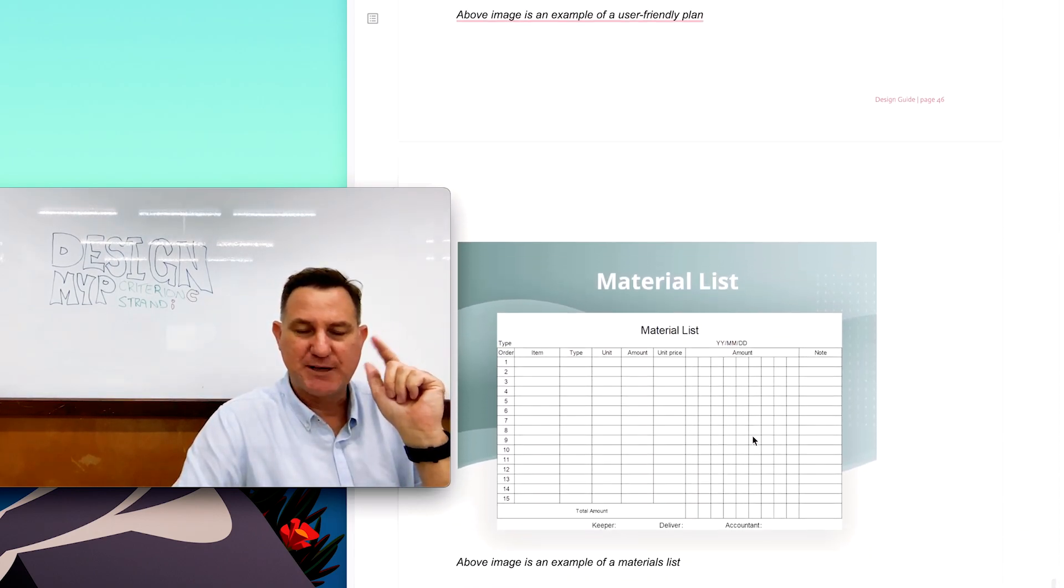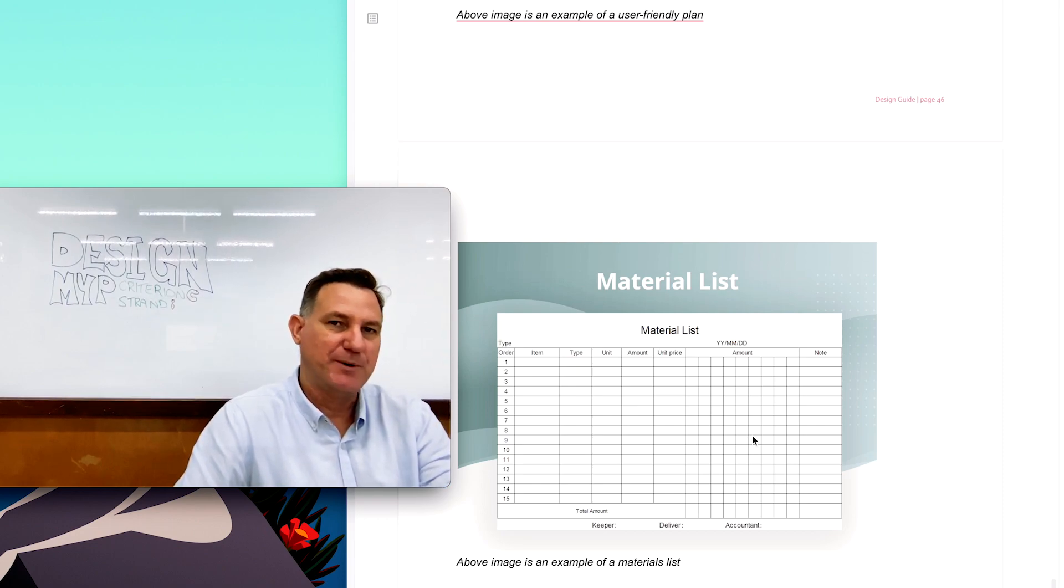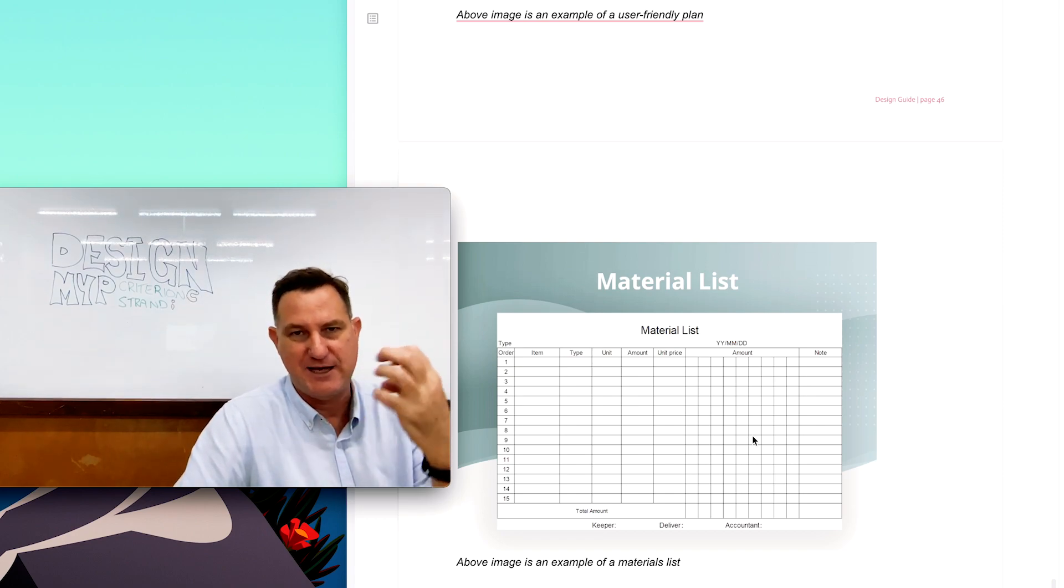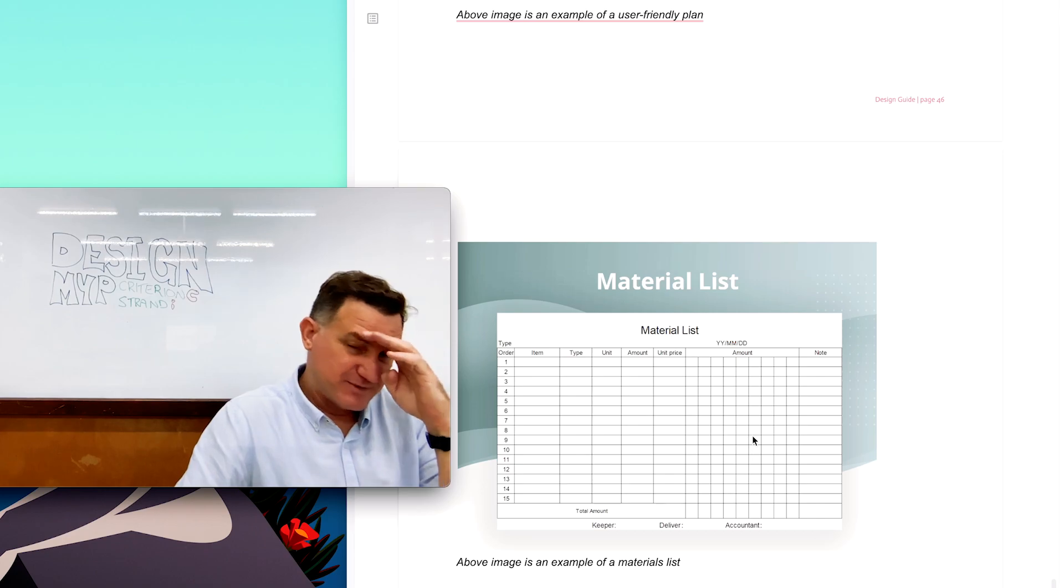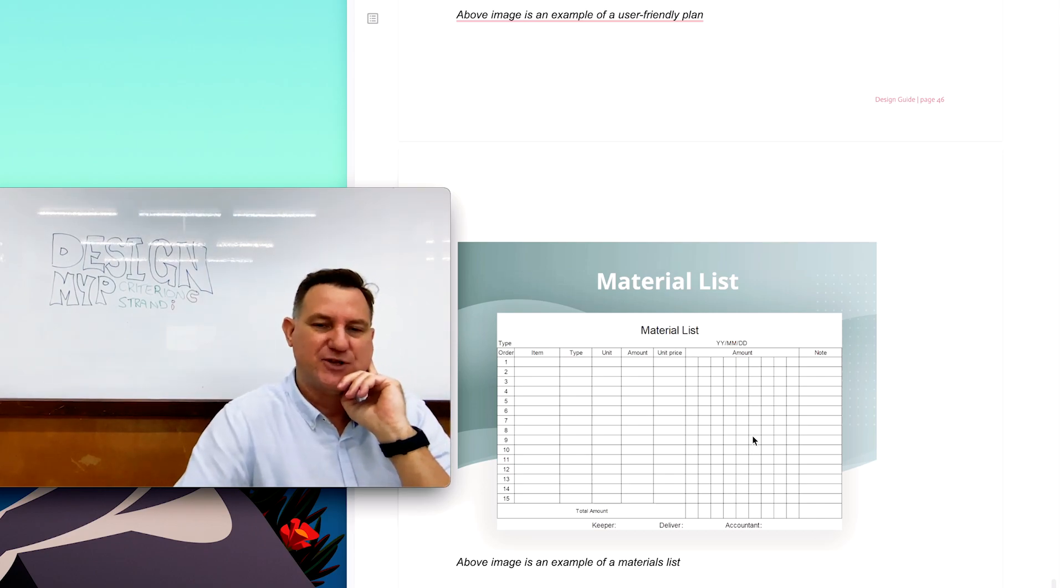If you're building something, this is really handy too. And this is for the resources. You might need to come up with a material list. These are all the materials that I need to build my whatever it might be. Maybe it's some clothing, maybe it's cooking. You need all these ingredients for your cake or whatever it might be. So materials list takes care of the resources in this strand.